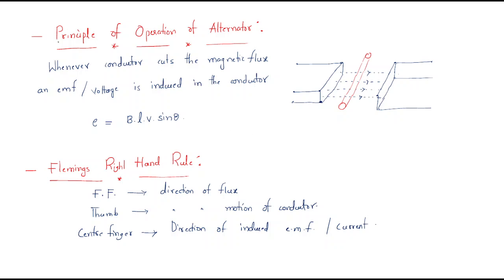Now let's understand the principle of operation of the alternator. It is based on Faraday's law: whenever a conductor cuts the magnetic flux, an EMF or voltage is induced in the conductor. When the conductor rotates, the flux through it varies, and that is when EMF is induced across it.